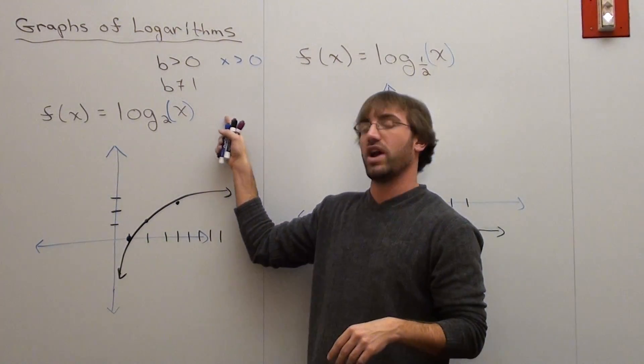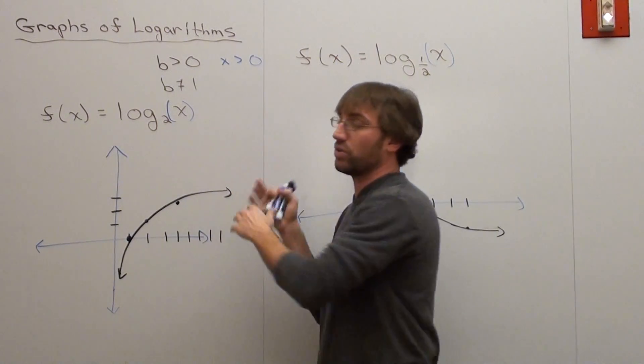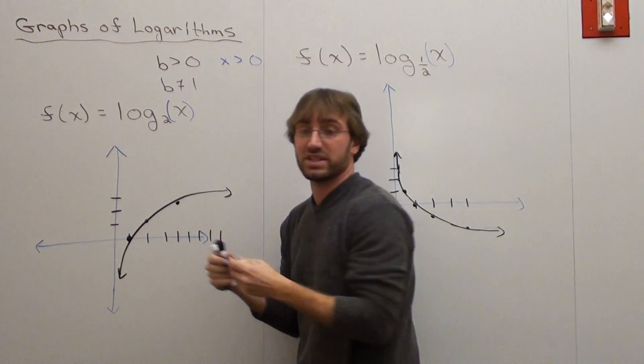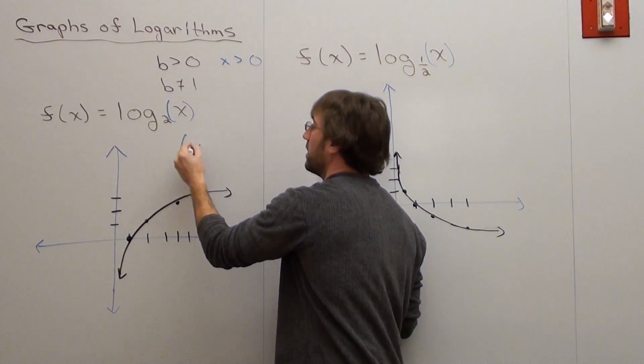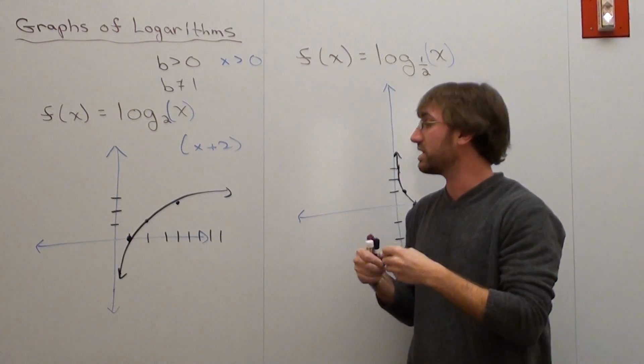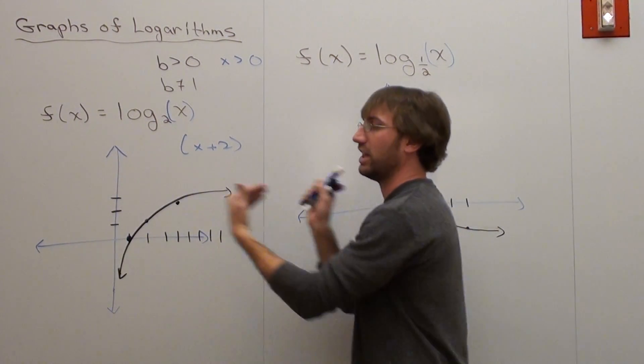But that's assuming that the subtracted or the added 2 is after the logarithmic function. If there's a subtract 2 or add 2 inside the parentheses like this, x plus 2, log base 2 of x plus 2, then what ends up happening is the graph gets shifted to the left or to the right.